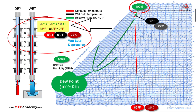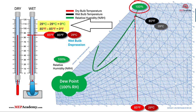Dew point is the temperature at which air becomes fully saturated — 100% relative humidity — and moisture condenses into liquid dew. If the dry bulb temperature falls to the dew point temperature, condensation occurs, leading to dew or fog. When the wet bulb temperature is close to the dry bulb temperature, the air is near saturation and the dew point is close to the current temperature, meaning high humidity levels.